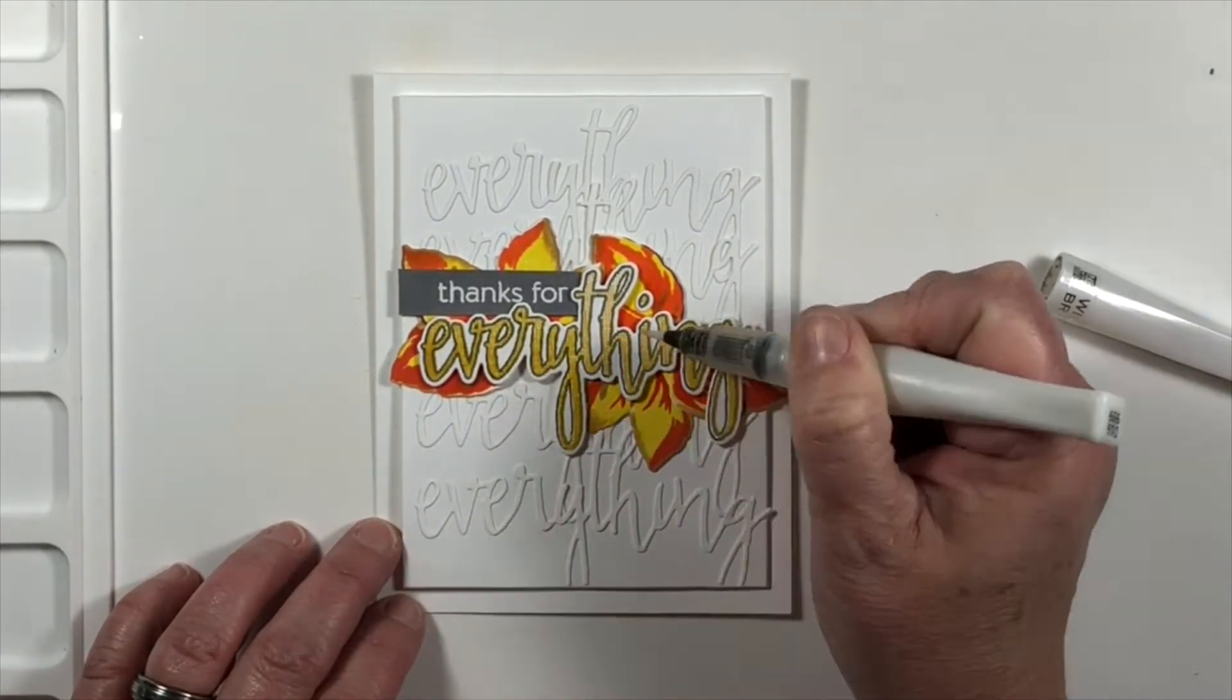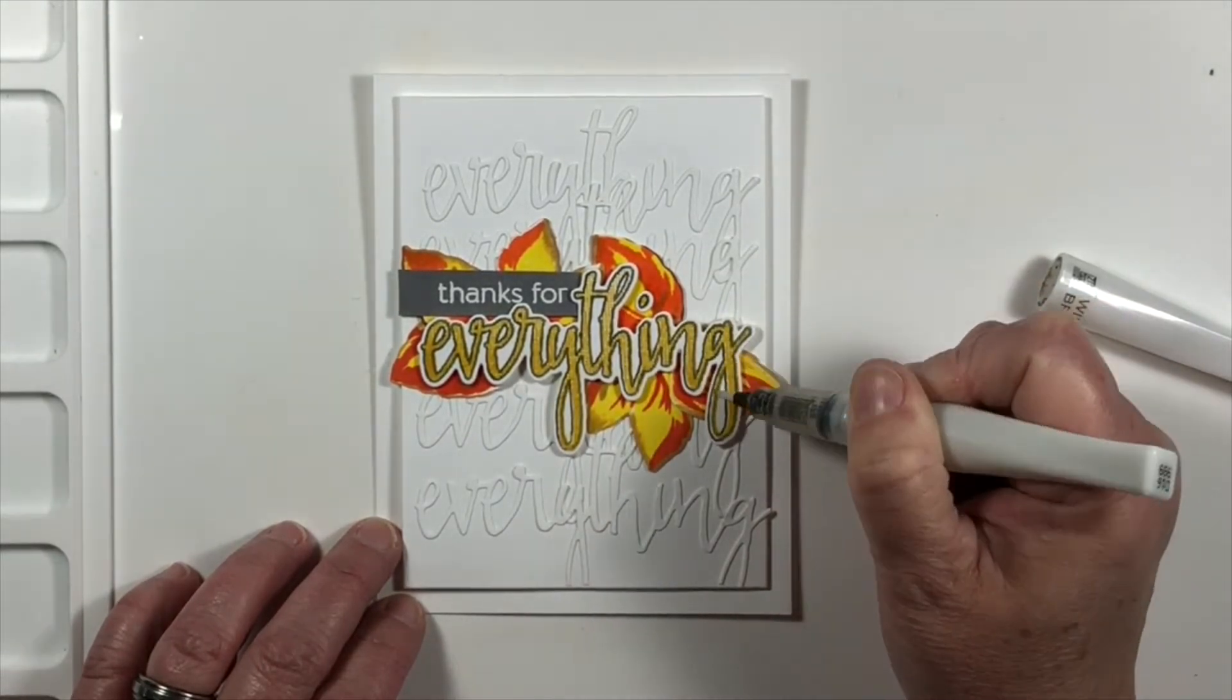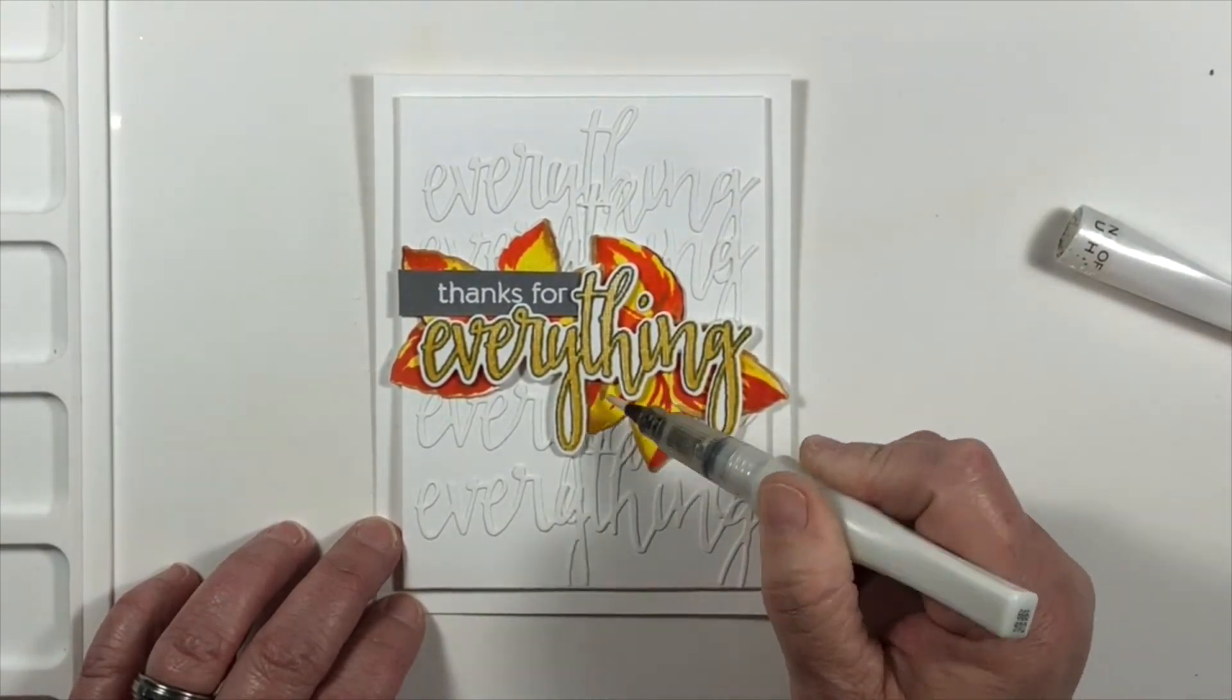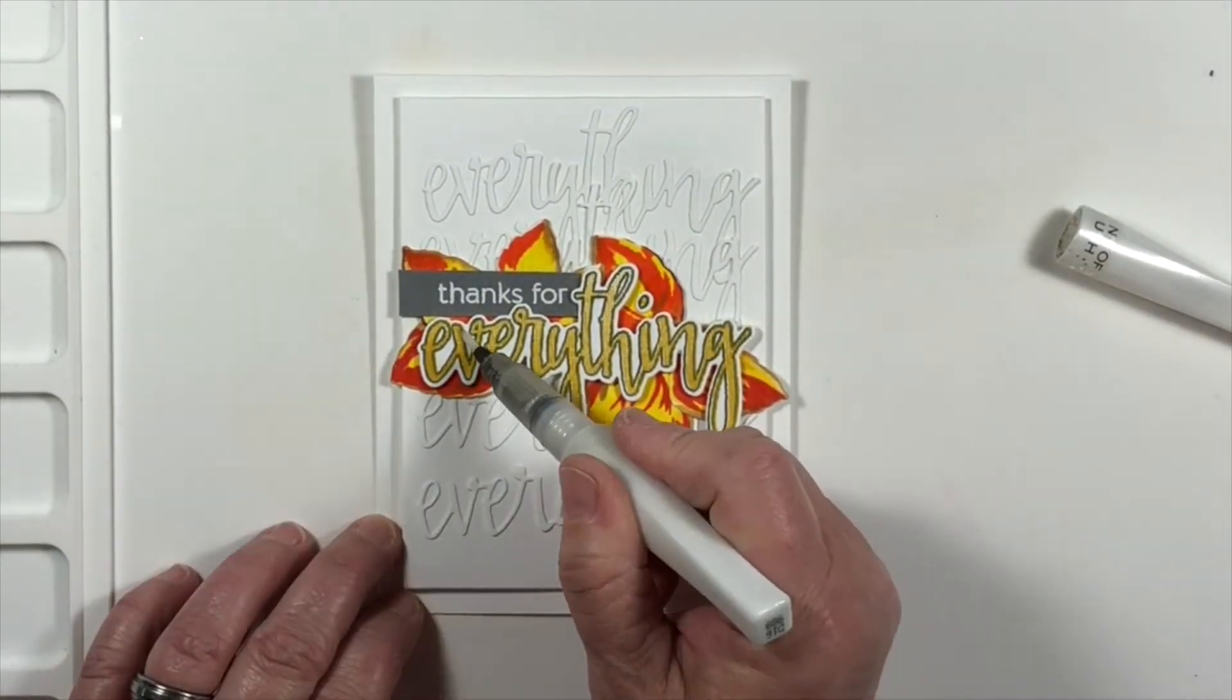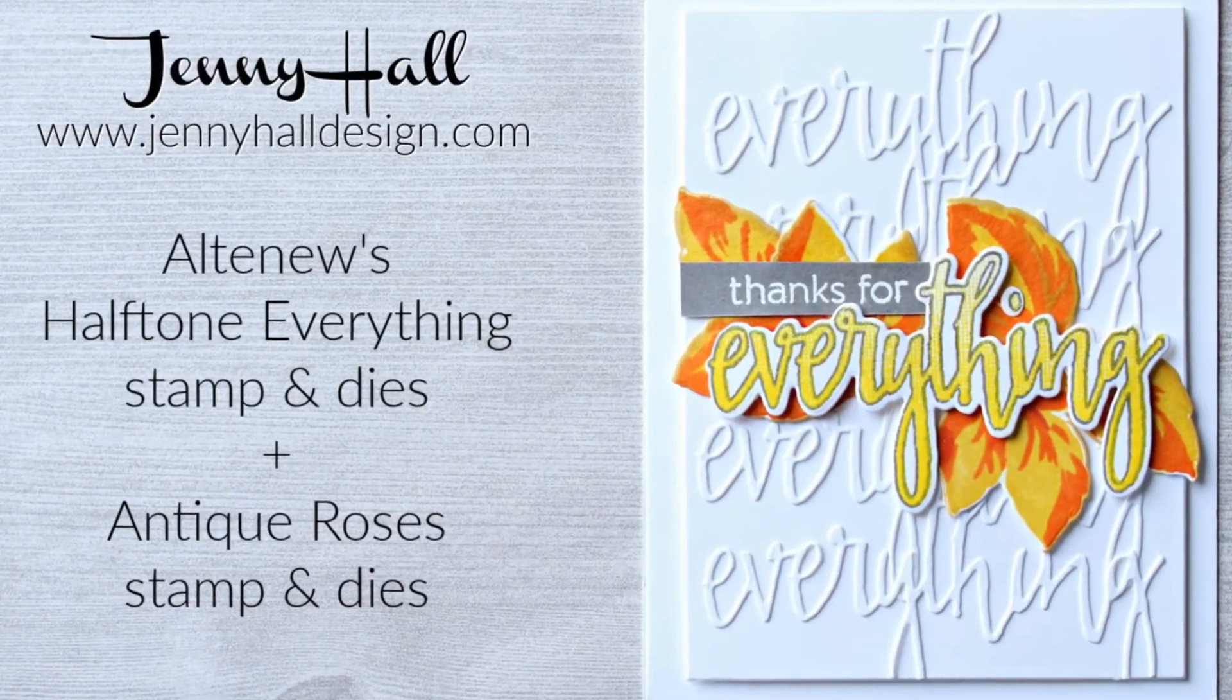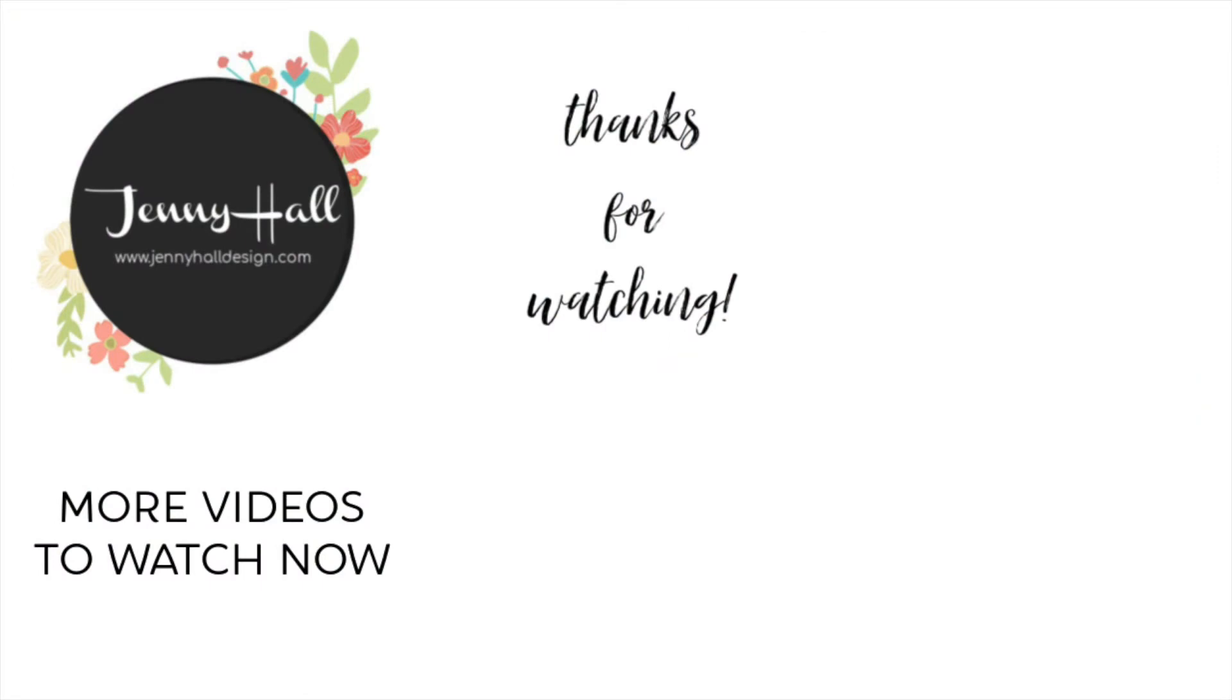And I couldn't help resist using Wink of Stella to put a little bit of sparkle because I didn't want to add any sequins. I thought just enough sparkle would look nice from the Wink of Stella. And there you have it. It's a fun project. It has loads of possibilities to change out. Thank you so much for joining me today. And I hope to see you in the next video.